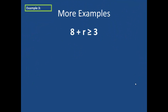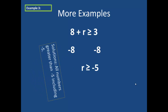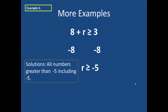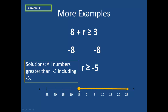In example 3, we look at the problem 8 plus r is greater than or equal to 3. In order to solve this, we subtract 8 from both sides, which yields r is greater than or equal to negative 5. Therefore, our solutions are all numbers greater than negative 5, including negative 5. When graphing this on the number line, I put a closed point at negative 5 — the closed point means that negative 5 is a part of the solution set — and then draw an arrow pointing to the right.